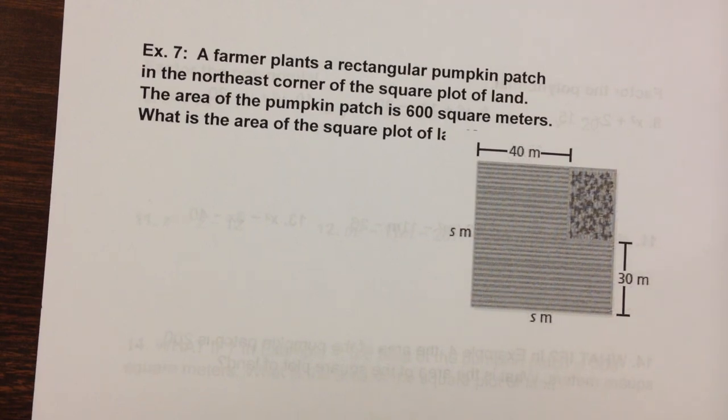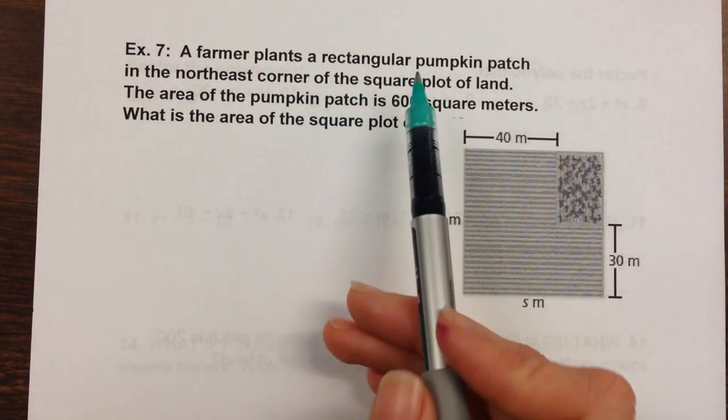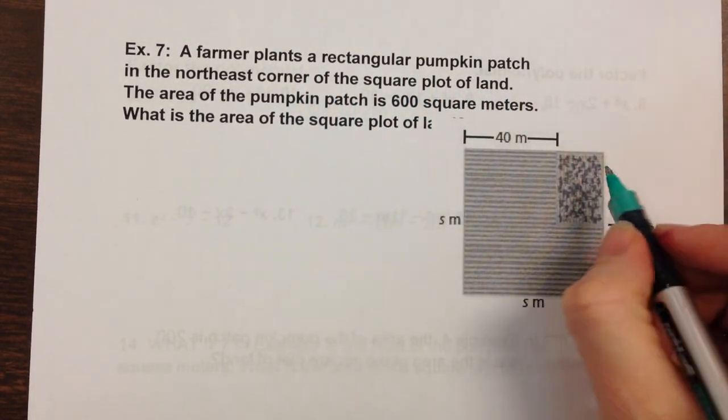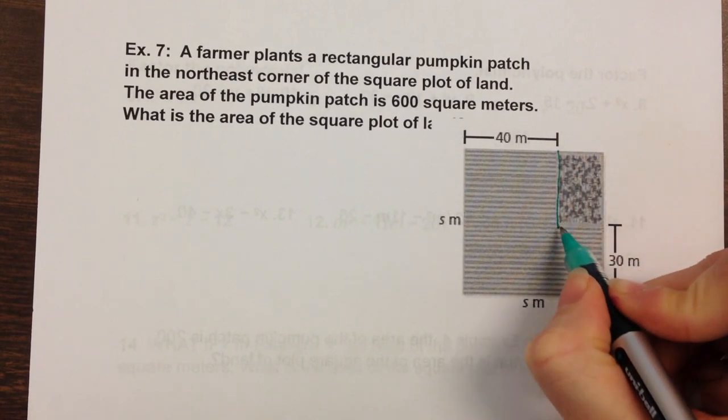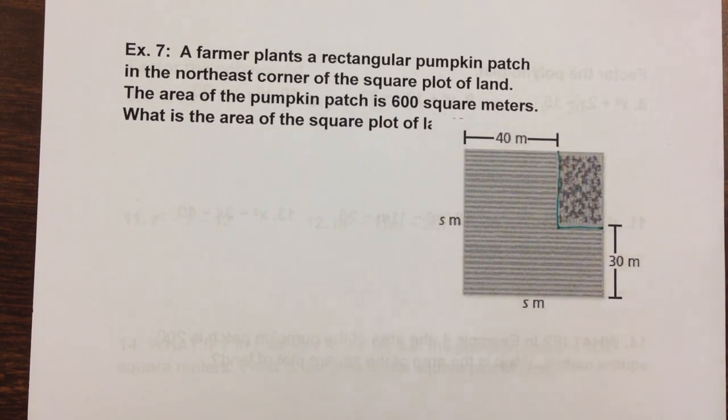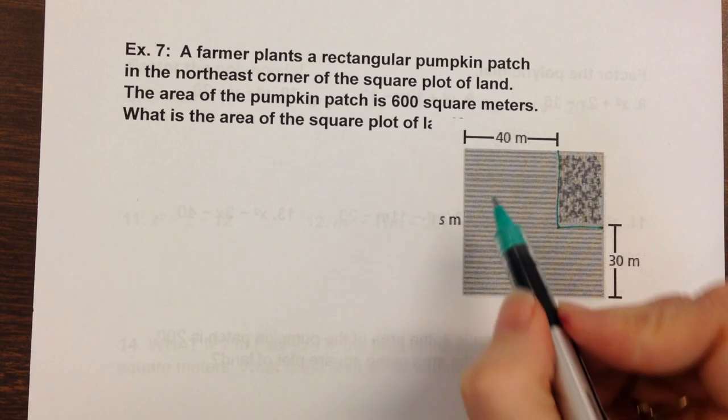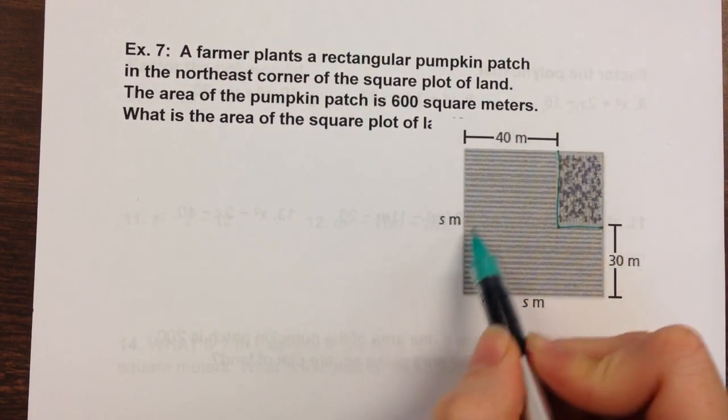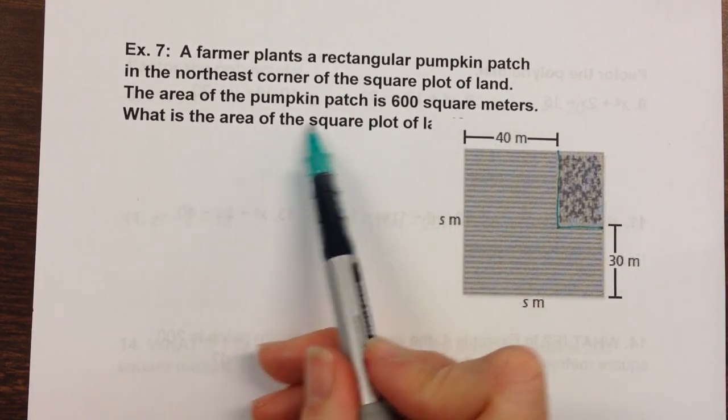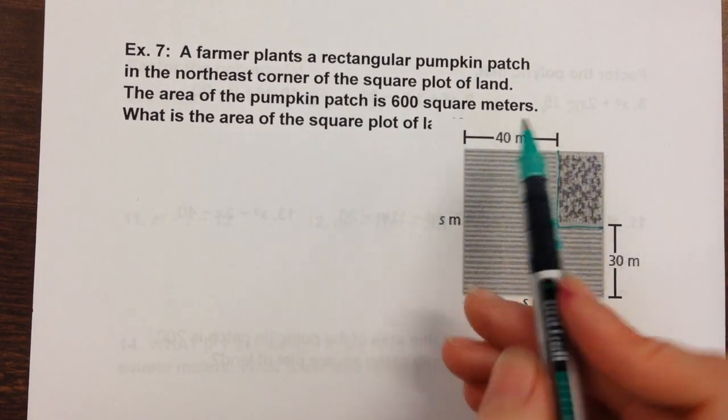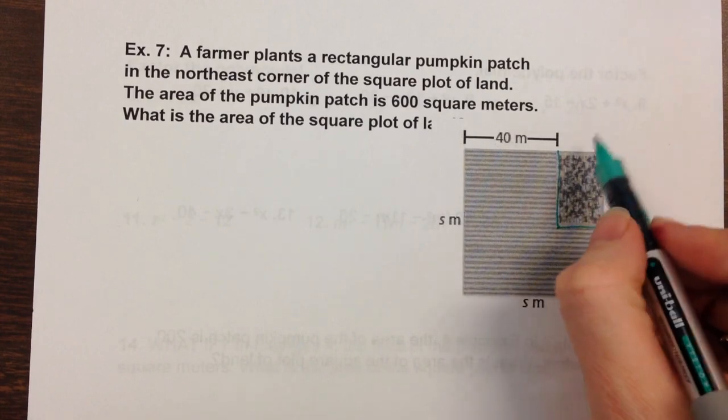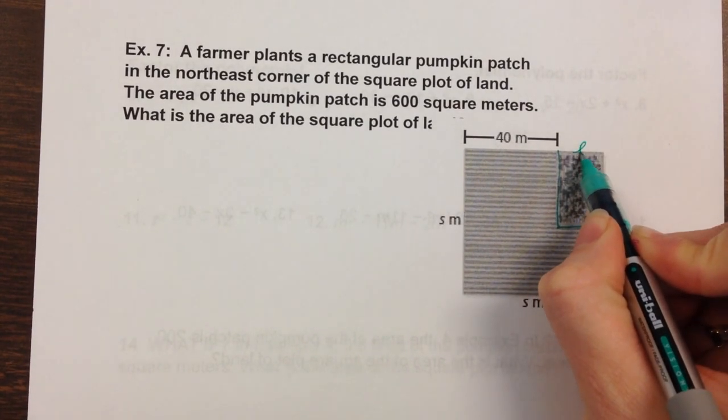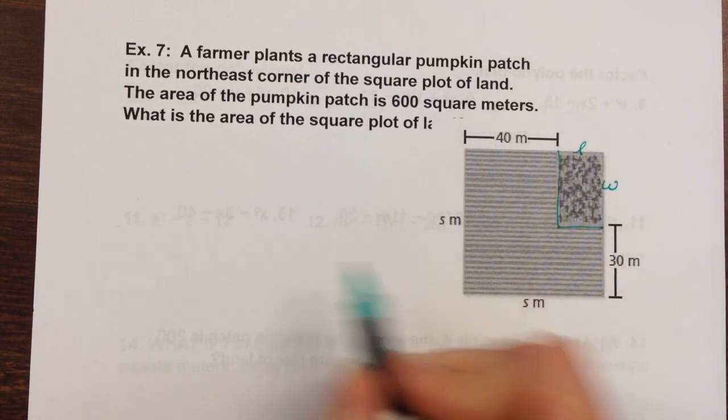So example 7, a farmer plants a rectangular pumpkin patch, so this would be my rectangular pumpkin patch, in the northeast corner of this square plot of land. This is a square. I don't seem to know how large it is. It says the area of the pumpkin patch is 600 square meters. So this length times this width is 600.